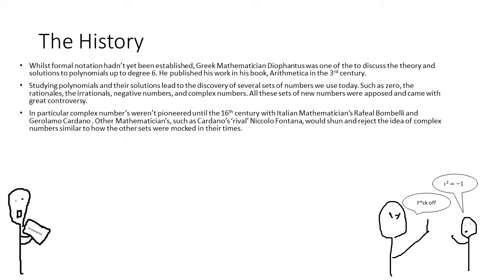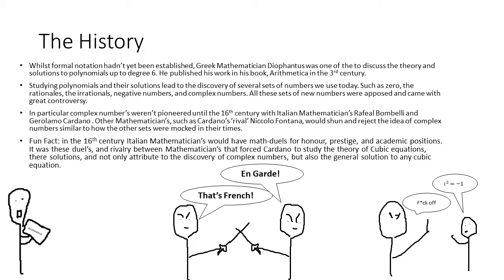It was also around this time that the set of complex numbers was uncovered by Italian mathematicians Raphael Bombelli and Gerolamo Cardano, allowing for previously impossible problems to be solved. All these extensions to the set of algebraic numbers sparked controversy, because mathematicians would be mocked for posing ideas as absurd as negative quantities or non-real numbers.